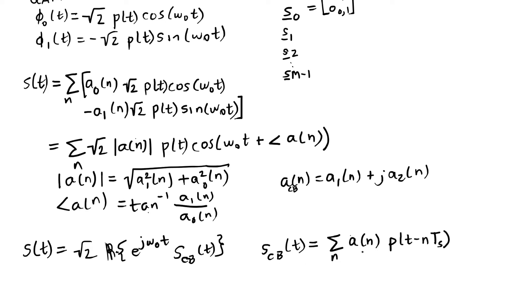So my complex baseband signal is an amplitude multiplied by the pulse shape delayed by n times T sub S. An here is a complex number. I could write it as ACB for complex baseband, but in general we will just avoid putting that on there and assume that if we're talking just about A and not A0 and A1 that it's going to be represented like this.